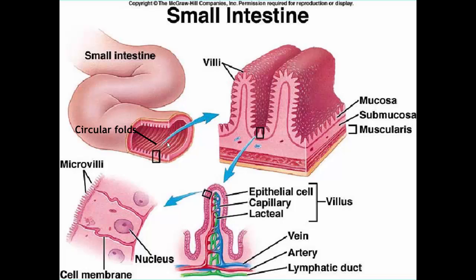Just as spinning makes a bullet or a football more accurate, the circular folds make food spin as it travels through the small intestine. Getting the food to spin means more of it comes in contact with the wall, resulting in better digestion and better absorption — which is exactly what the small intestine needs to do.